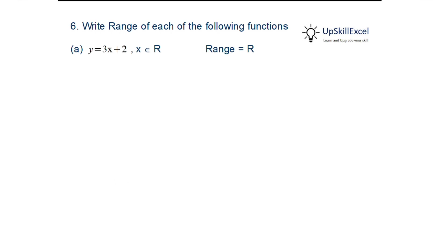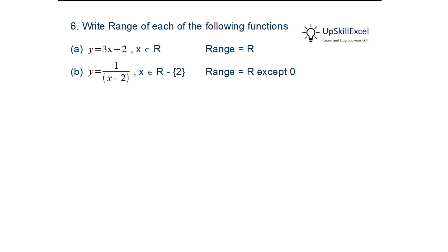Write the range of the following functions. For y = 3x+2, x ∈ ℝ: for any x in ℝ we get y in ℝ, so the range is ℝ. For y = 1/(x−2), x ∈ ℝ−{2}: y cannot become 0 at any value of x, so the range is ℝ−{0}.